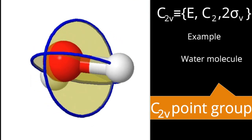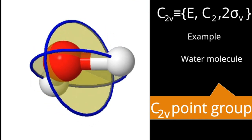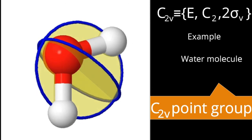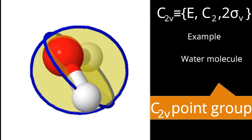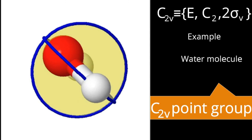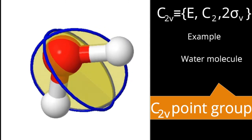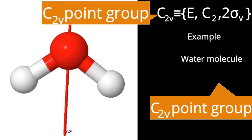How can we represent it? The rules we need to follow are: first rule, we should represent identity — identity is represented. Second rule, principal axis and remaining axes need to be represented. Here there is only one axis, the C2 axis, so we represent C2.